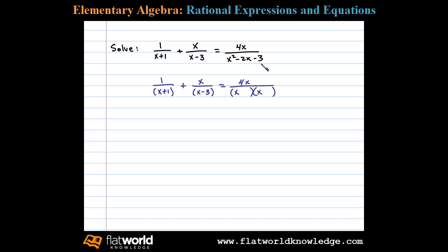We'll use 1 and 3. 1 and 3 add up to negative 2 if we have x minus 3 times x plus 1. Negative 3 times positive 1 is negative 3. Negative 3x plus 1x is negative 2x.